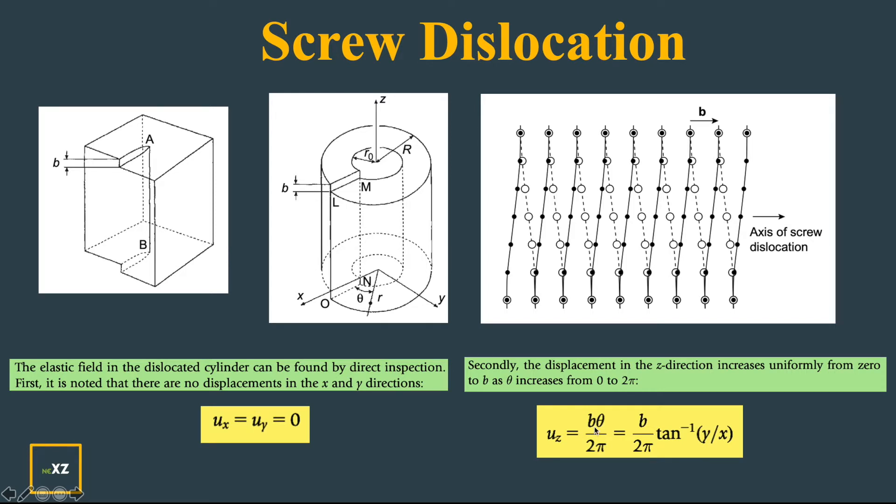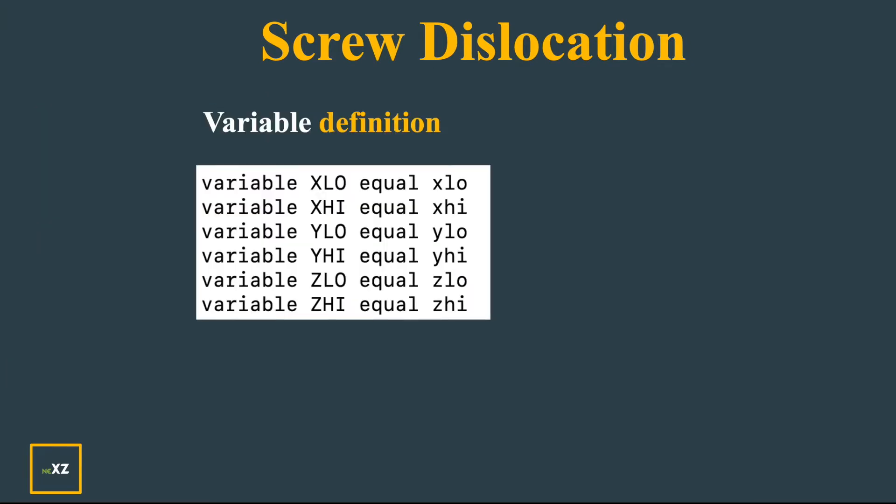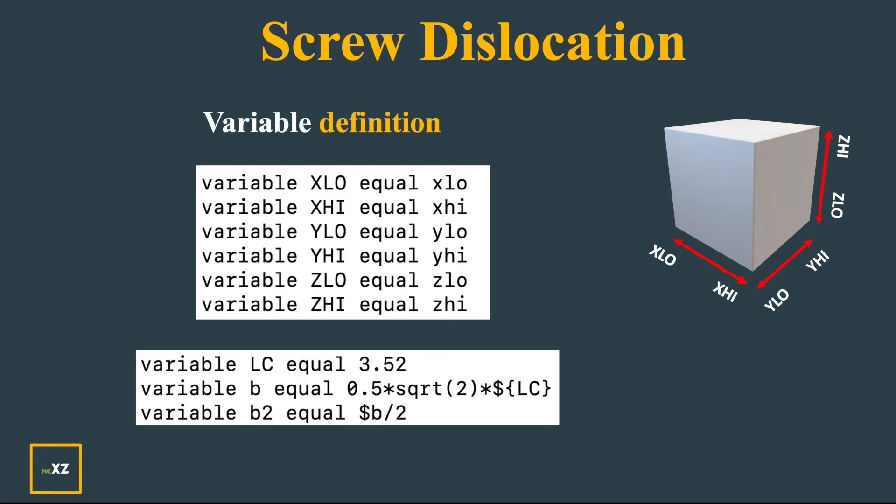Now I give variable definitions of the boundaries so that I can use them later in my code. Then I give the variable definitions of lattice constant and burgers vector. For an FCC, it's half [1 1 0], so that's a constant divided by square root of 2. And b2 is half of the burgers vector which I'll use in my code.